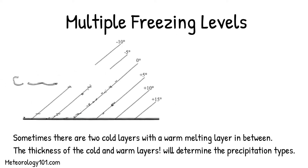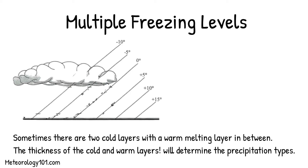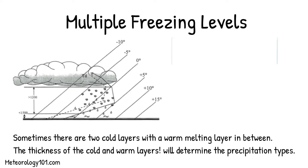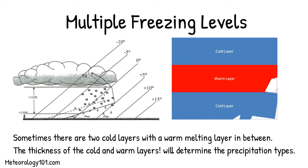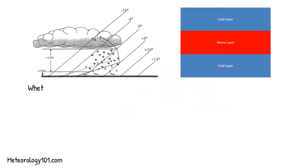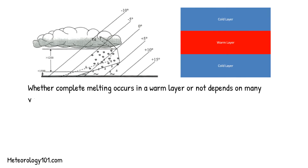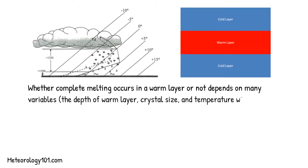Multiple freezing levels. Sometimes there are two cold layers with a warm melting layer in between. The thickness of the cold and warm layers will determine the precipitation types. Whether complete melting occurs in a warm layer or not depends on many variables: the depth of the warm layer, crystal size, and temperature within the warm layer.